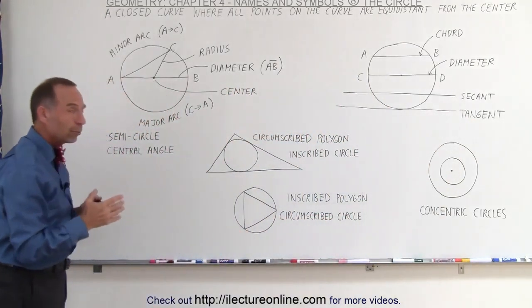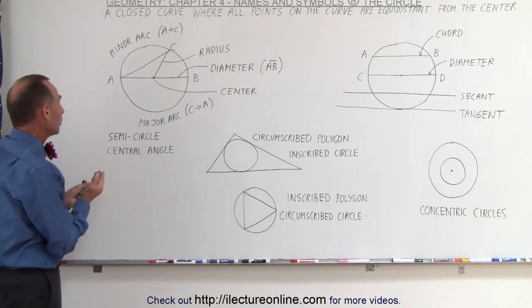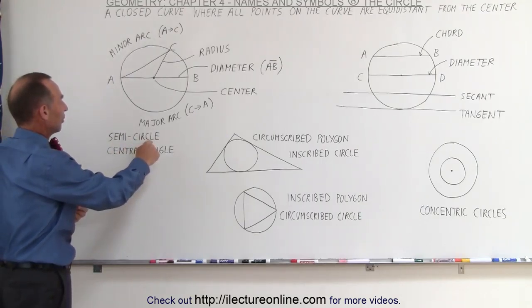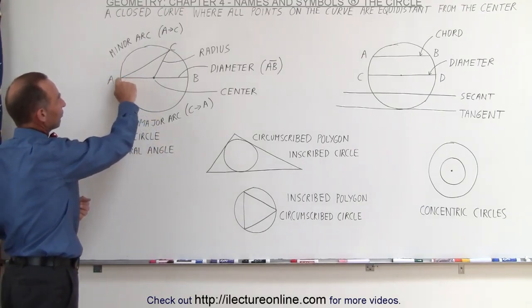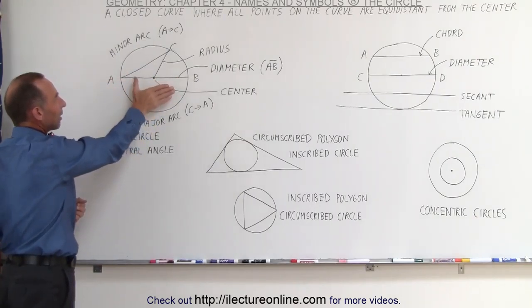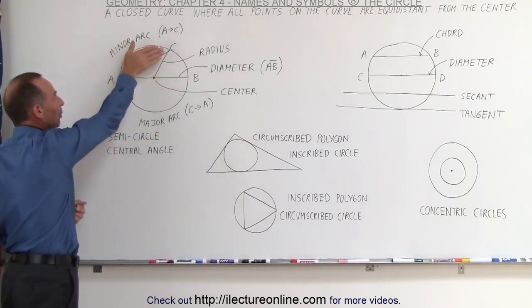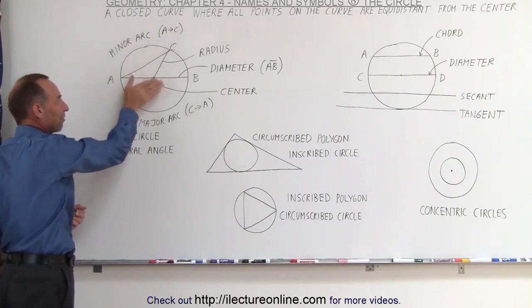Now we can also have some other words here that we should know or be familiar with, called the semicircle. If we draw a line like here from A to B, and it goes to the center, then we have the circle divided into two what we call semicircles, or half circles.